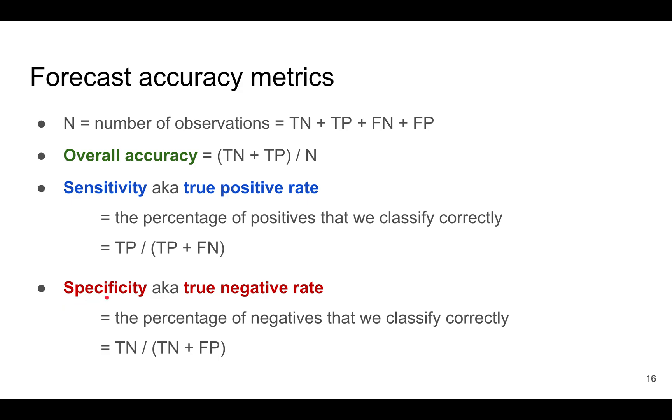The specificity, or the true negative rate, is the percentage of the negatives that we classify correctly. And this is the formula.